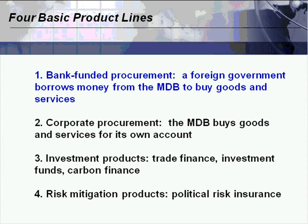There are four basic product lines at the multilaterals. I'll use the World Bank as the example. The main focus today is bank-funded procurement, where a foreign government borrows money from the World Bank to buy goods and services to implement a particular project—it might be a health, road, or power project. There's also corporate procurement, a much smaller amount where the bank buys goods and services for its own account, about $800 million a year compared to last year's lending of over $70 billion. There are also trade finance products, carbon finance, and political risk insurance for investors. We'll focus on bank-funded procurement because that's where the bulk of the money is.